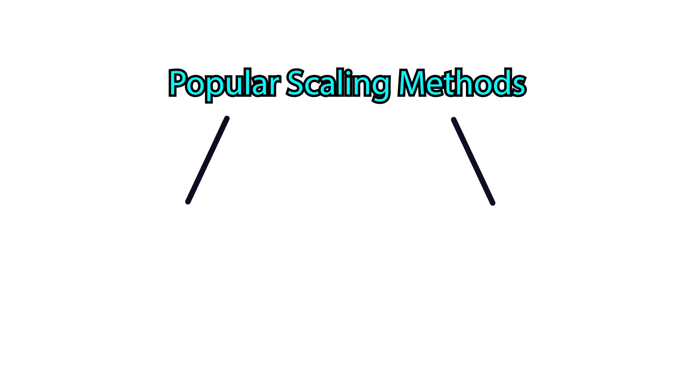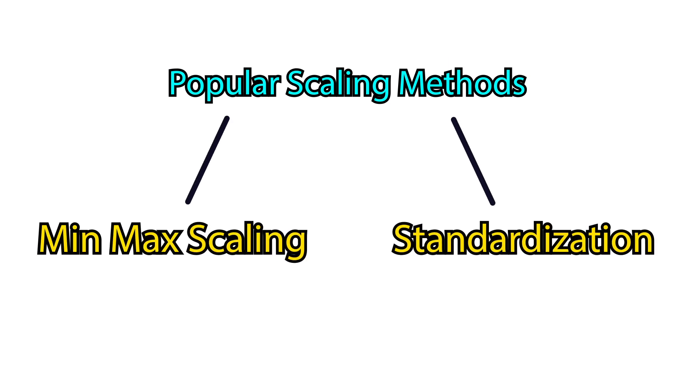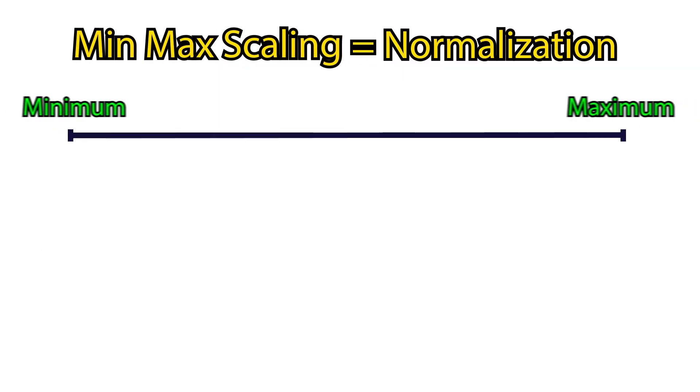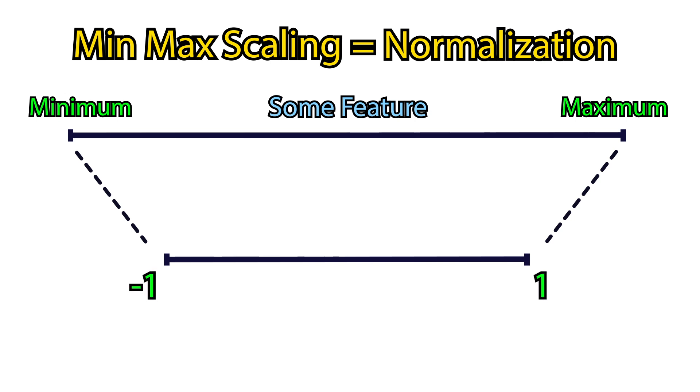The two most popular scaling methods used in machine learning are min-max scaling and standardization. Min-max scaling or normalization scales data into the range of negative 1 to positive 1, or 0 to 1.